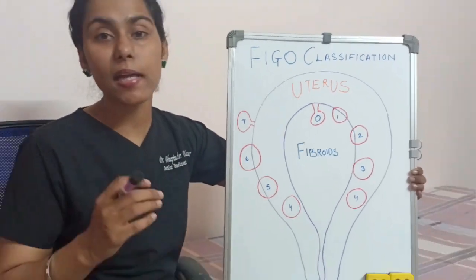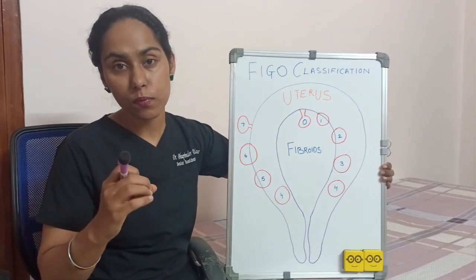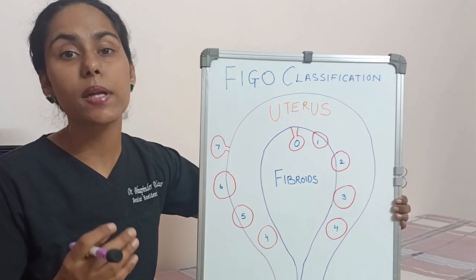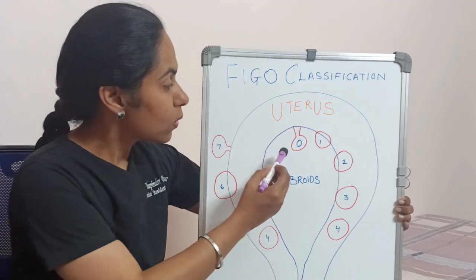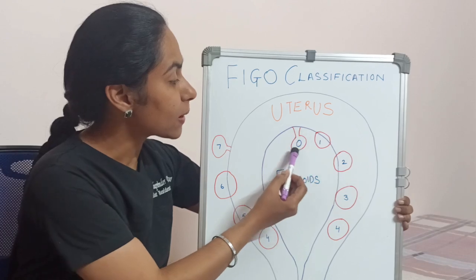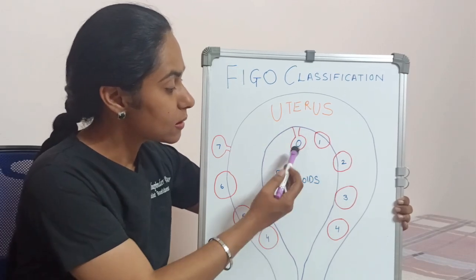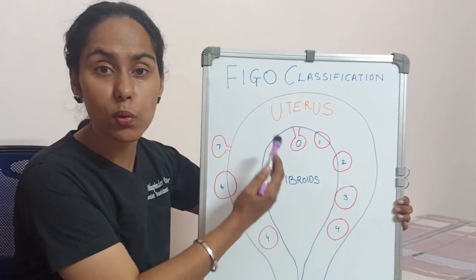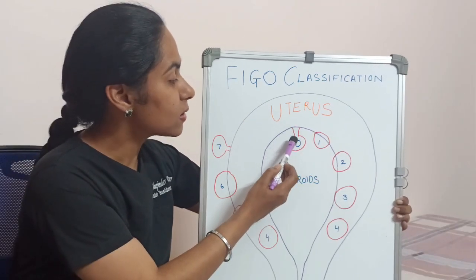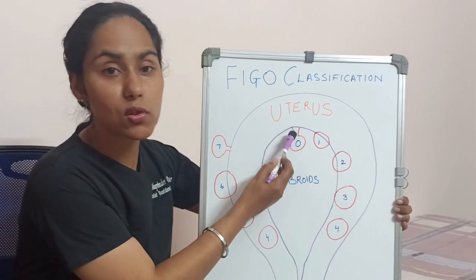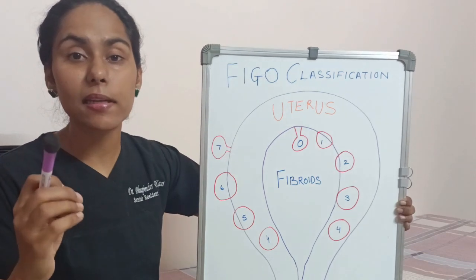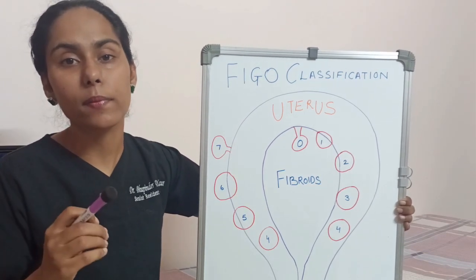First we have type 0, the submucosal type of fibroid which is pedunculated. This type 0 fibroid is towards the cavity — submucosal — and it is attached to the uterus by a stalk, which means it is a pedunculated fibroid.